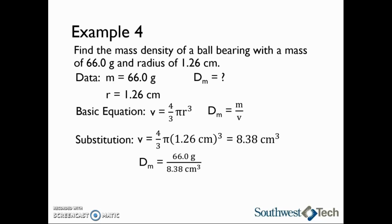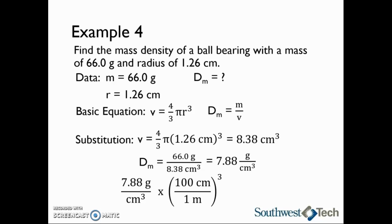Next we can use this to find the mass density by taking 66.0 grams and dividing by 8.38 cubic centimeters. This gives us a mass density of 7.88 grams per cubic centimeter. However, mass density should have units of kilograms per cubic meter, so we need to convert. We write 7.88 grams over one cubic centimeter, then cube the conversion of 100 centimeters per meter for the volume, and multiply by one kilogram per 1000 grams. This gives us a mass density of 7880 kilograms per cubic meter.